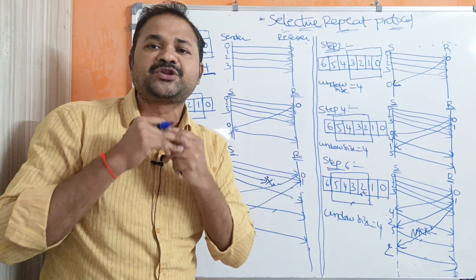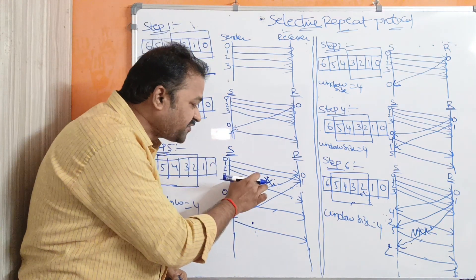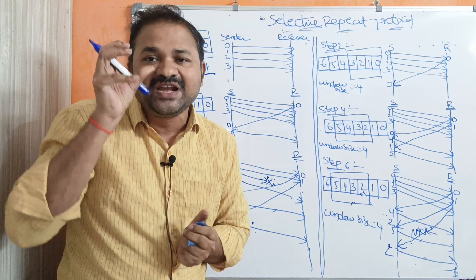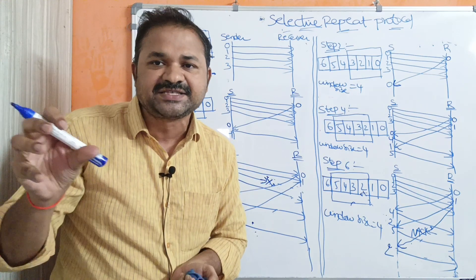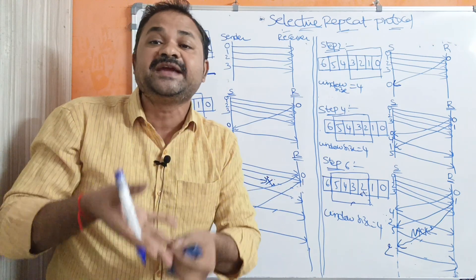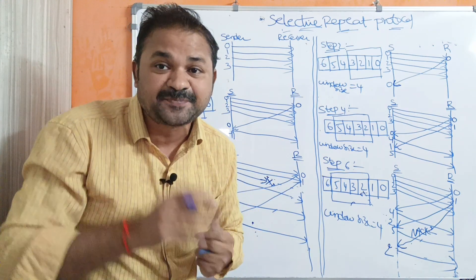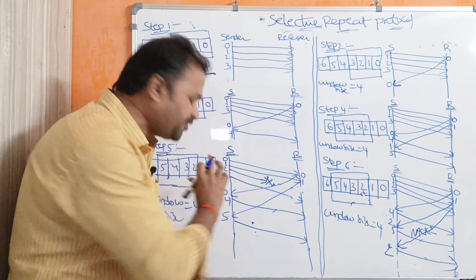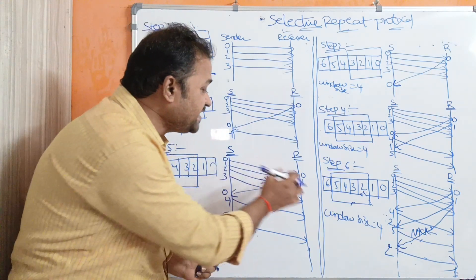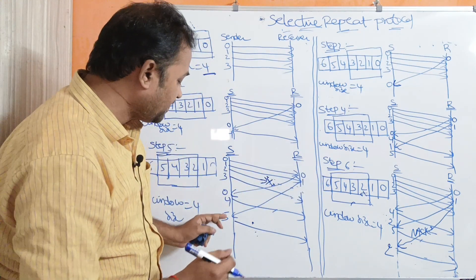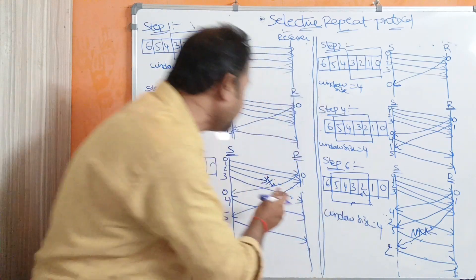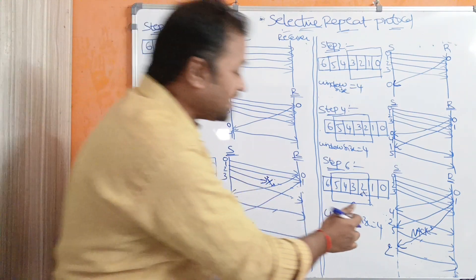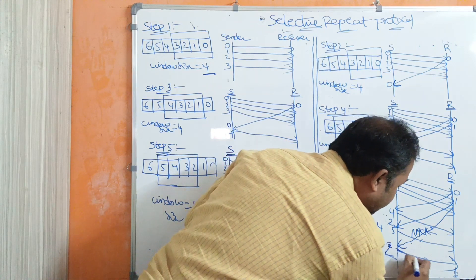Now let us assume that frame number 2 is lost. Every frame has a timer, and the sender will wait for the acknowledgement from the receiver for that particular time only. If the time period expires and the sender does not receive any acknowledgement, then the sender will retransmit that frame once again. So since no acknowledgement is received for frame 2, the sender will retransmit frame 2 one more time.